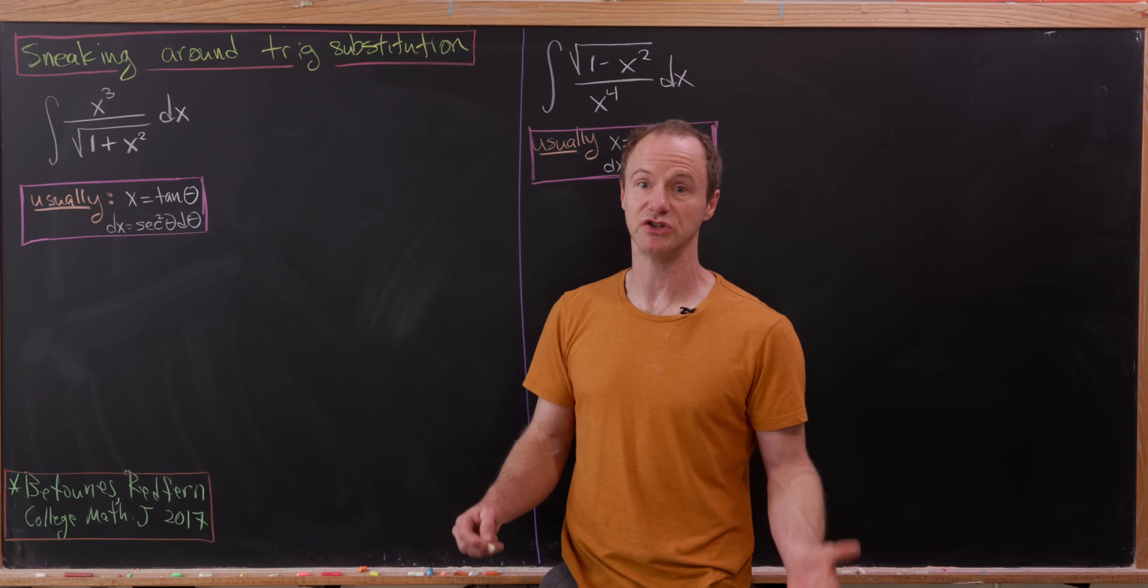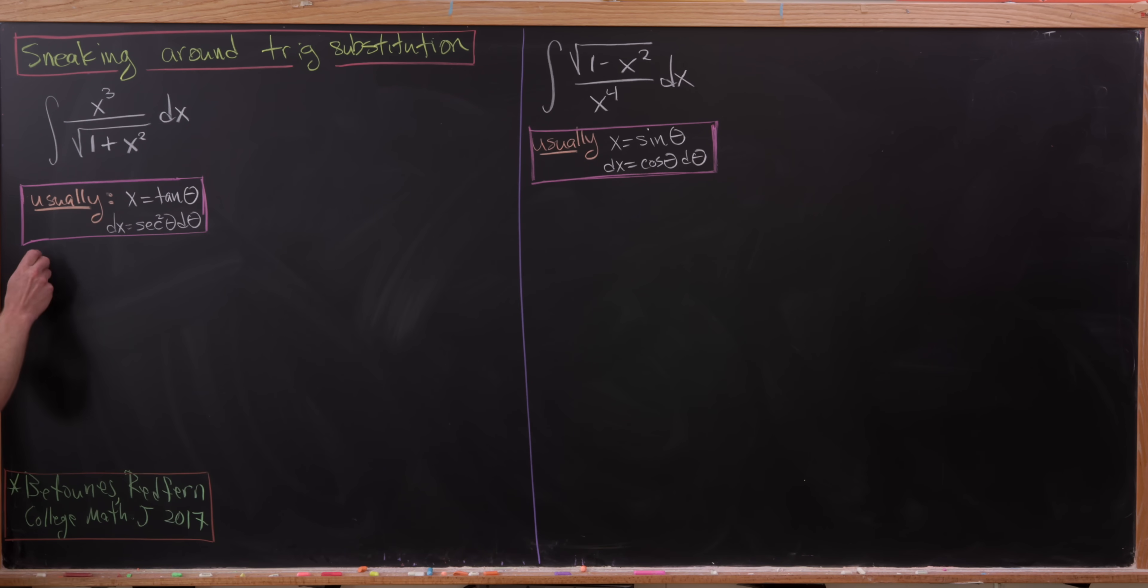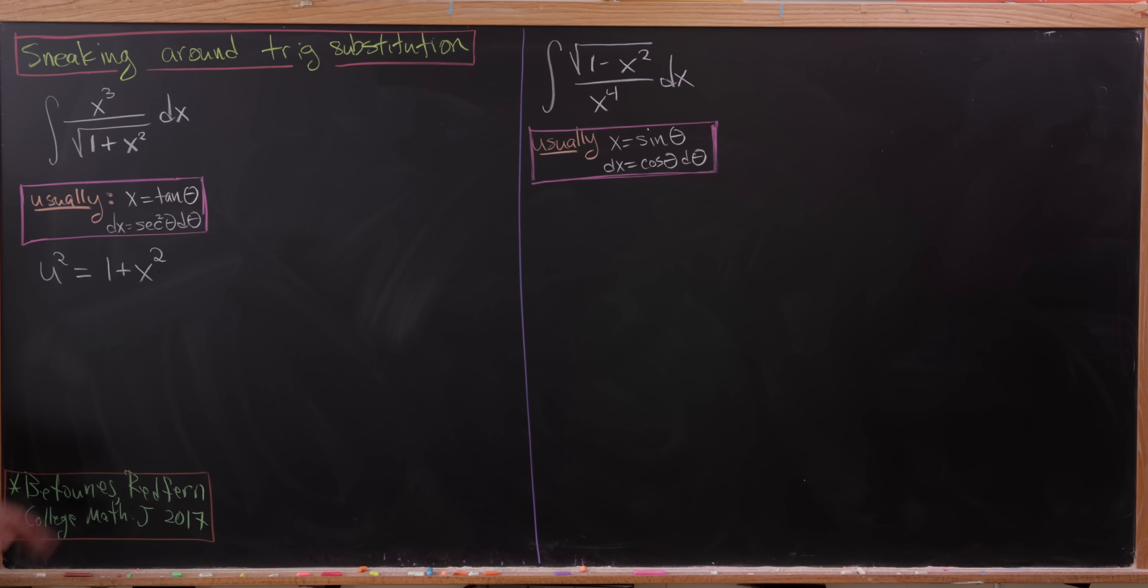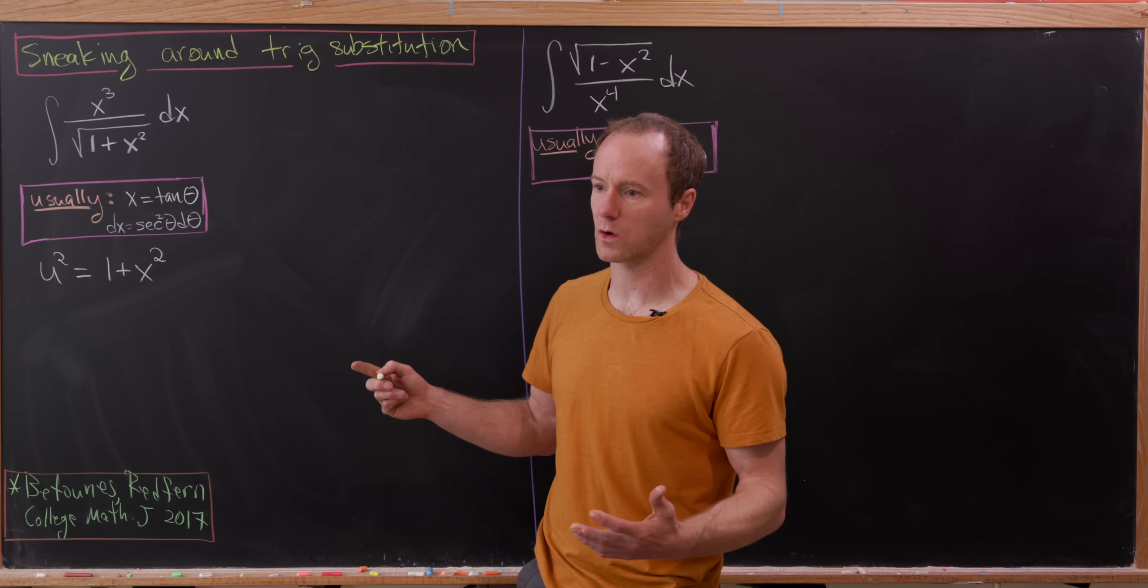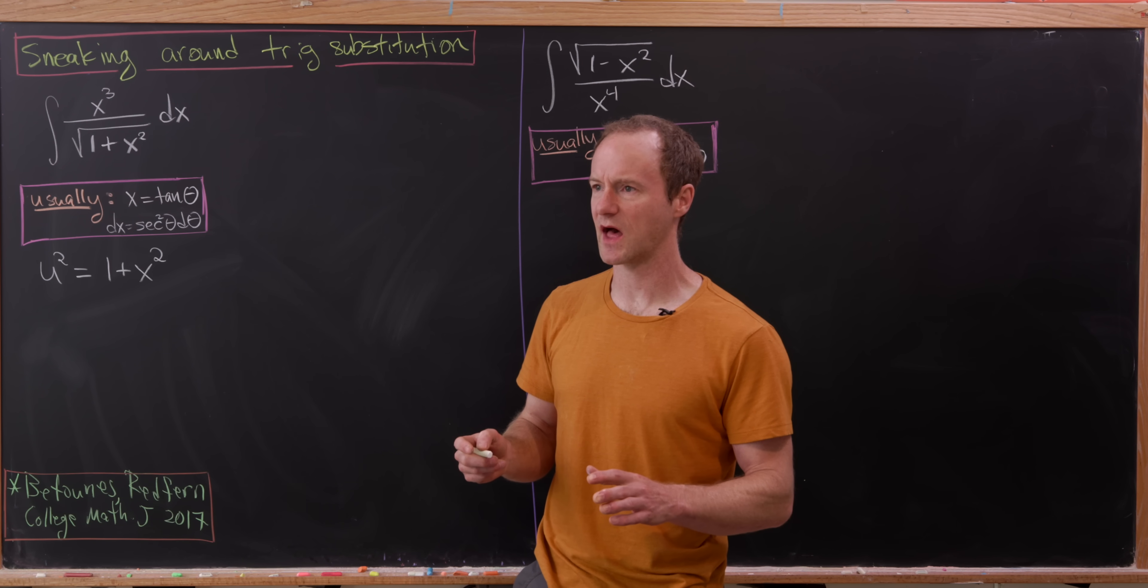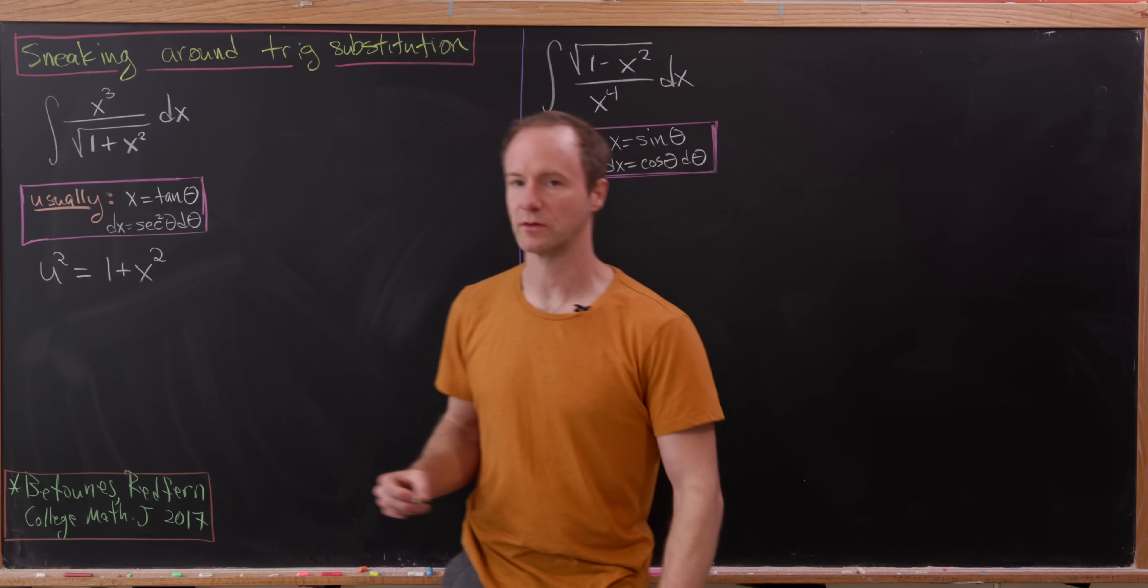So what we'll do is a so-called u squared substitution. And here, we're going to set u squared equal to 1 plus x squared. I guess that's equivalent to setting u equal to the square root of 1 plus x squared. And I should say that in this case over here, the jump towards evaluating this integral without trig substitution is pretty straightforward and something that could easily be guessed if you're good at substitutions. What we'll see over here is a little bit trickier.